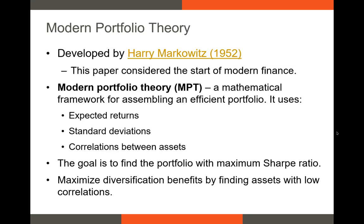Modern portfolio theory is often thought of as the start of modern finance. It's one of our earliest academic papers, from 1952, and it's seen as where our discipline starts to separate itself from economics. This is a Nobel Prize-winning theory. What it does is build a framework for assembling an efficient portfolio — given expected returns, standard deviations of your assets, and correlations between those assets, you can identify the portfolio that has the maximum Sharpe ratio. Our entire goal with this first step of MPT is to maximize our Sharpe ratio.